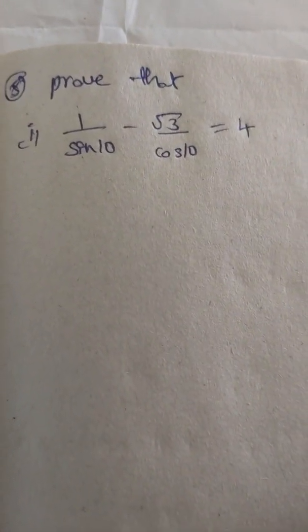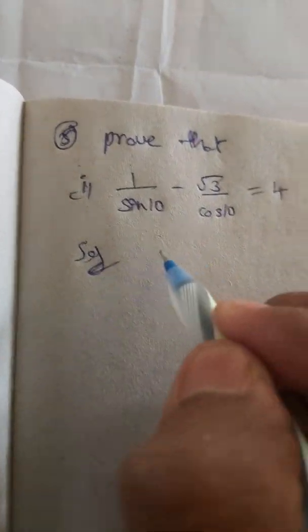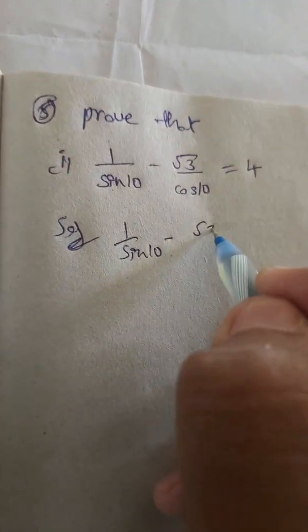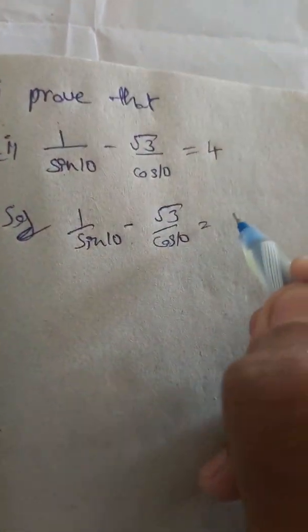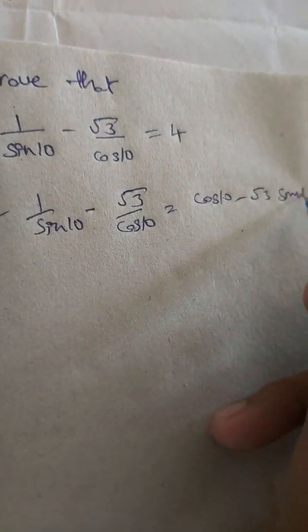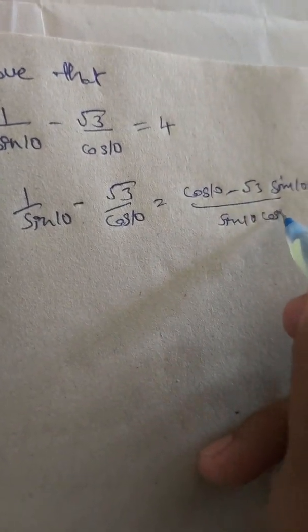Problem 1: Prove that 1/sin(10°) minus √3/cos(10°) is equal to 4. Solution: Taking LCM, 1/sin(10°) minus √3/cos(10°) equals cos(10°) minus √3·sin(10°) divided by sin(10°)·cos(10°).